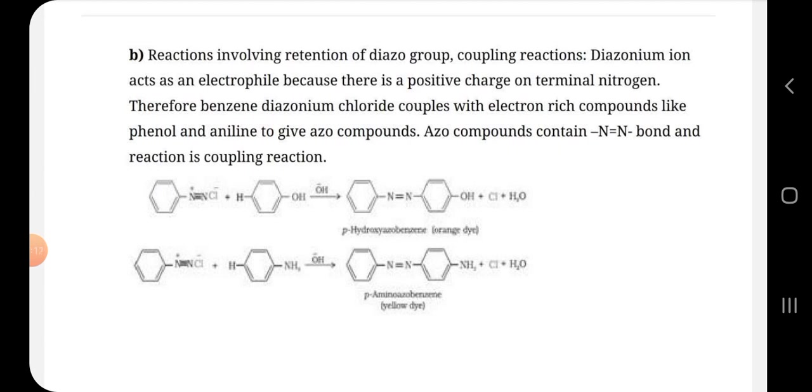Diazonium ion acts as an electrophile because there is a positive charge on terminal nitrogen. Therefore, benzenediazonium chloride couples with electron-rich compounds like phenol and aniline to give azo compounds. Azo compounds contain N double bond N and the reaction is called coupling reaction or azo-dye reaction.